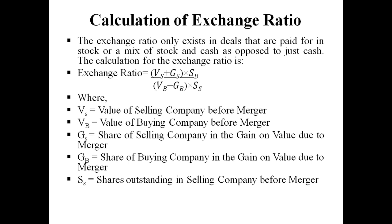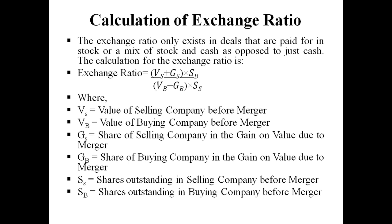SS is shares outstanding in the selling company before merger — so whatever shares of the subsidiary company are outstanding in the market before merger go into SS. SB is shares outstanding of the buying company before merger — whatever shares of the buying company are outstanding in the market go into SB. These six factors are applicable in the formula to determine the exchange ratio value.